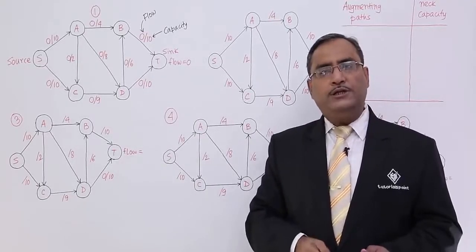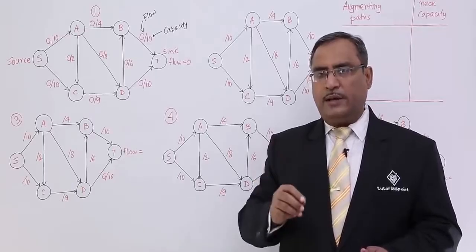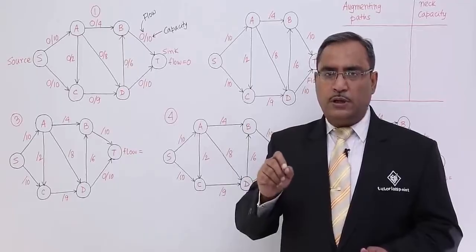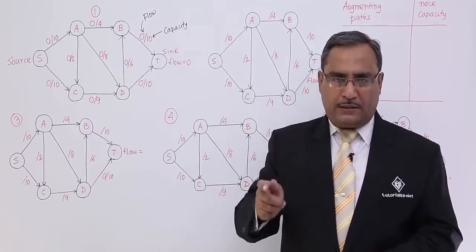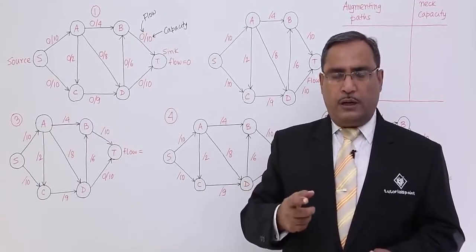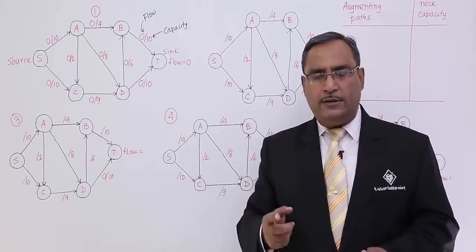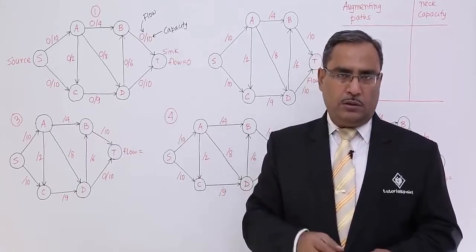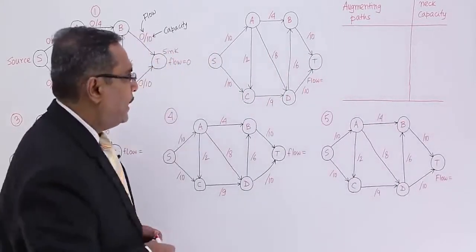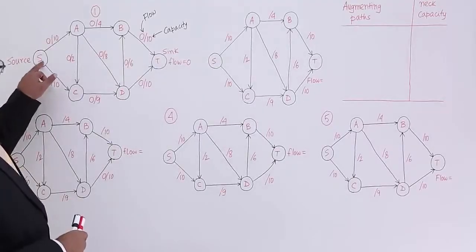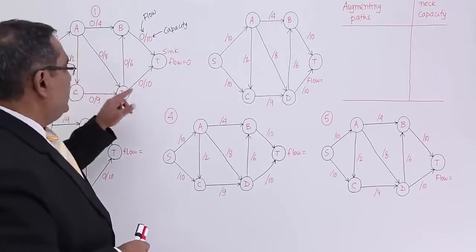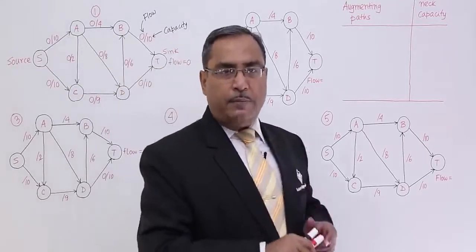In our algorithm we have three statements. The first statement was flow is equal to 0, and the second statement was whenever we find some augmenting path from the source to the sink, we shall go on computing the flow of that particular path and that flow will be added with the main flow. Now let me select one augmenting path. At first we are selecting a path s→a→d→t. That is the first augmenting path we are taking.